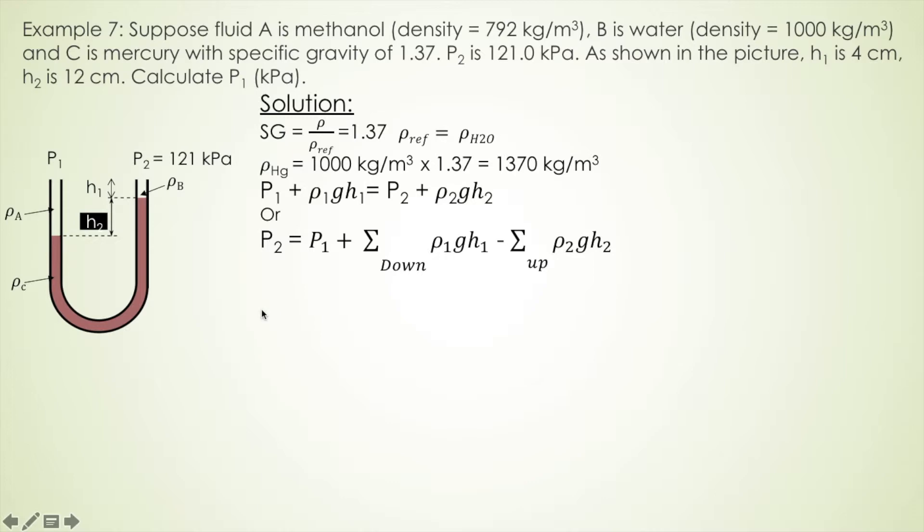Or we can use that. Another way to write down the manometer rule is pressure 2 on the right is equal to starting from P1. Whenever you see the liquid go down, we use plus symbol. So plus the pressure of the liquid in the downturn minus whenever the liquid go up, we use the minus symbol, which means that we are looking for the final elevation of the liquid and the initial elevation of the liquid.